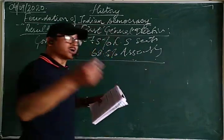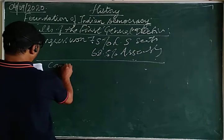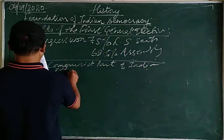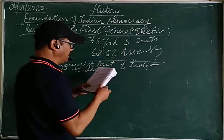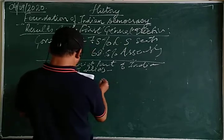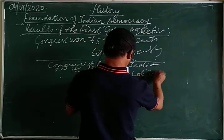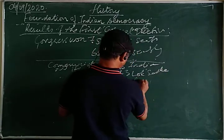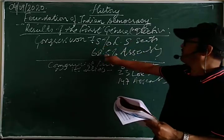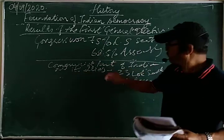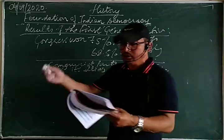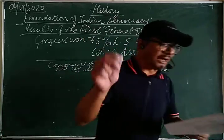Apart from Congress, the Communist Party of India (CPI) and its allies were the second largest party. They won 23 Lok Sabha seats and 147 assembly seats, receiving around 4.6% of the votes.